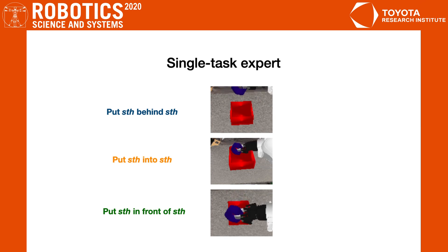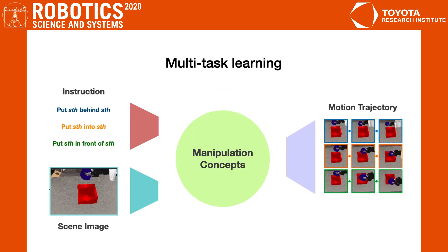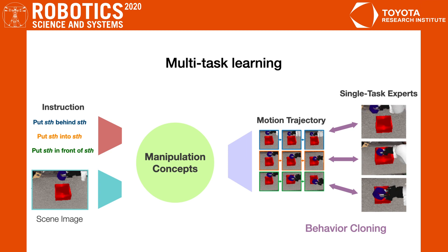Up to now, we have trained 78 single-task experts, each of which outputs motion trajectories to accomplish one specific task. But our ultimate goal is to construct a unified model to represent a diverse set of manipulation skills. We formulate this as a multi-task learning problem and train the multi-task policy by running behavior cloning on the previously learned single-task expert trajectories. The result is a unified model that takes in various task instructions and scene images as input, and outputs trajectories for 78 different tasks.